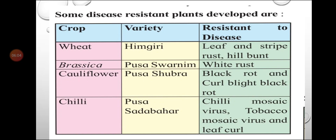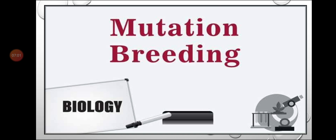Chili variety Pusa Sada Bahar is resistant to chili mosaic virus, tobacco mosaic virus, and leaf curl. Exam questions can ask for the variety name given a crop, or the crop name given a variety like Pusa Swarnim — answer: Brassica. The table can also appear as match-the-column or complete-the-table questions, so learn it thoroughly.